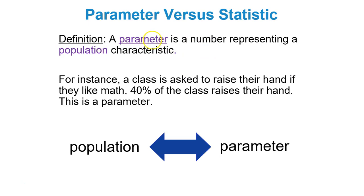So first there is parameters versus statistics. A parameter is a number that represents or uses everything or every person or every subject in the population. For instance, a class is asked to raise their hand. My class in this case is my population. It's what's being taken into consideration. They're asked if they like math and 40% raises their hand. Since everyone in the class and my population was used, this 40% is a parameter. They have population, parameter. They both start with P.